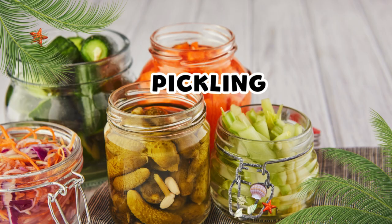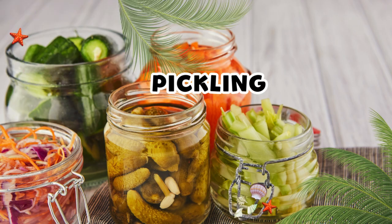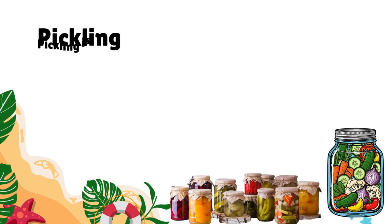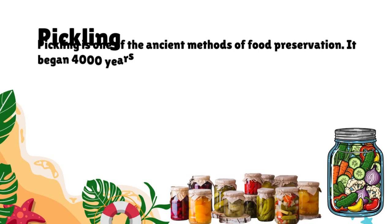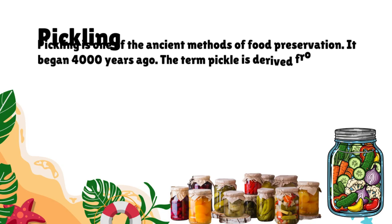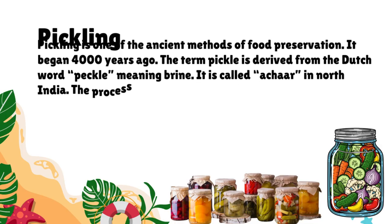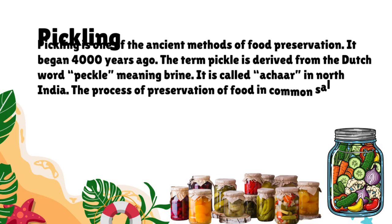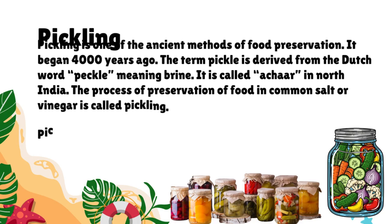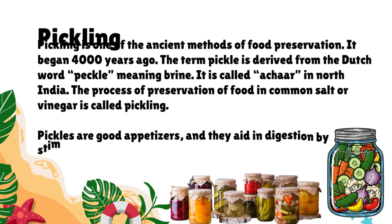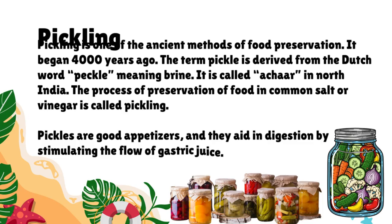Pickling is one of the ancient methods of food preservation, beginning 4,000 years ago. The term pickle is derived from the Dutch word 'peckle,' meaning brine. It is called 'achar' in North India. The process of preservation of food in common salt or vinegar is called pickling. Pickles are good appetizers and aid in digestion by stimulating the flow of gastric juice.